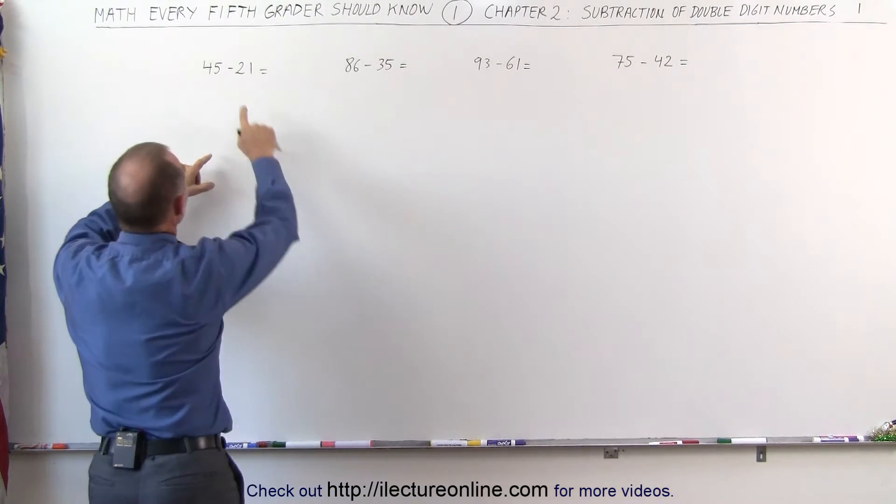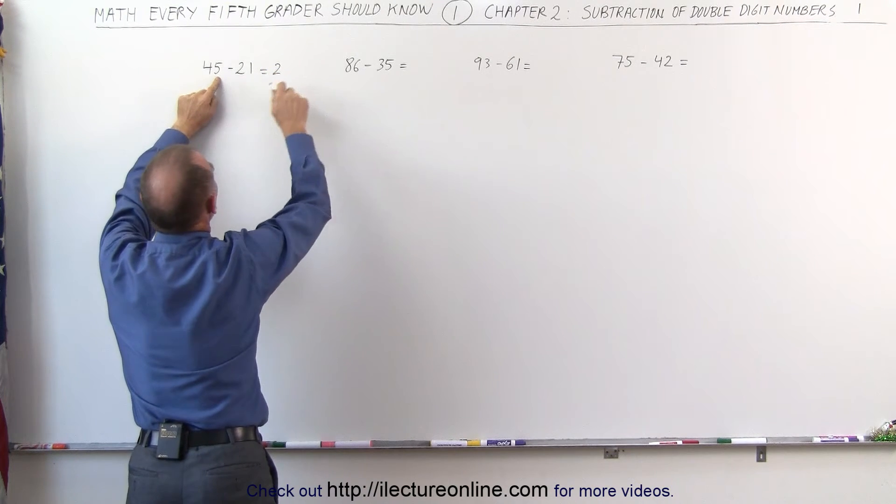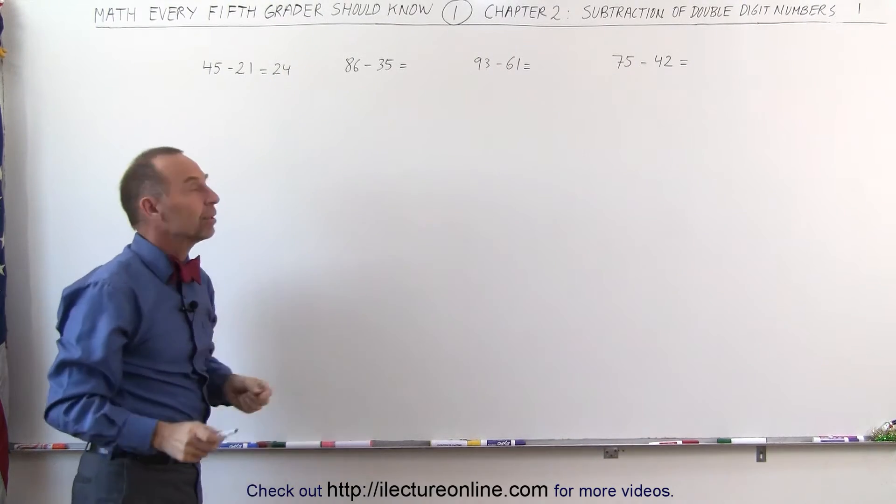What we do is we subtract the 2 from the 4, which gives us a 2, and we subtract the 1 from the 5, which gives us a 4. 45 minus 21 is 24.